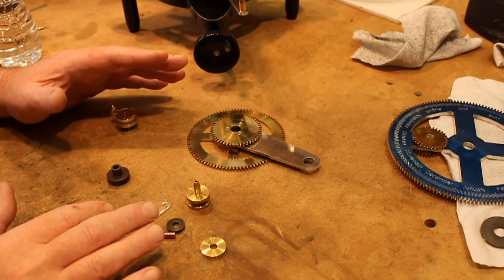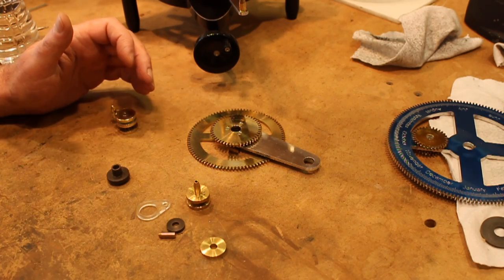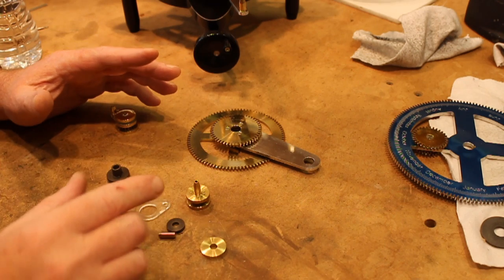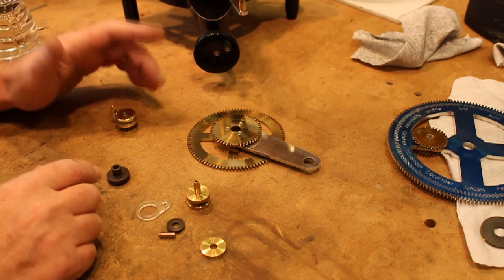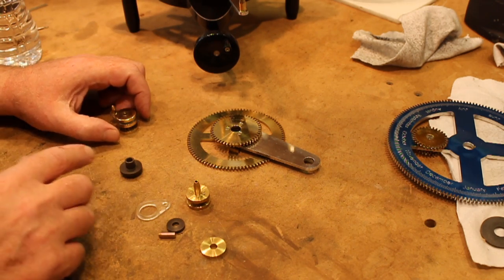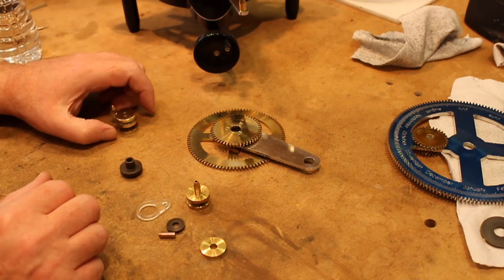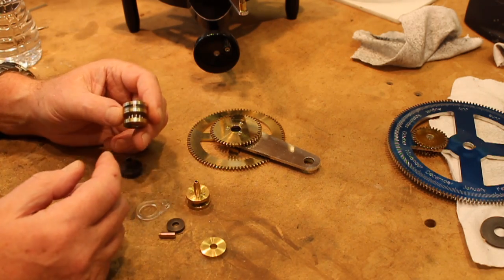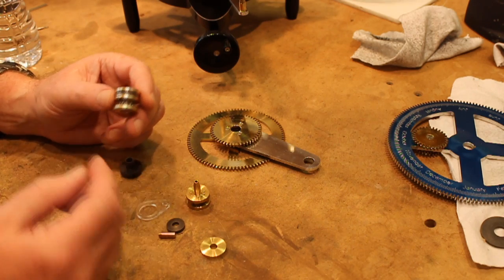I'm working on the set of parts that allow the moon to revolve around the earth and the earth to revolve around the sun. This is one of the most complex parts of the orrery.